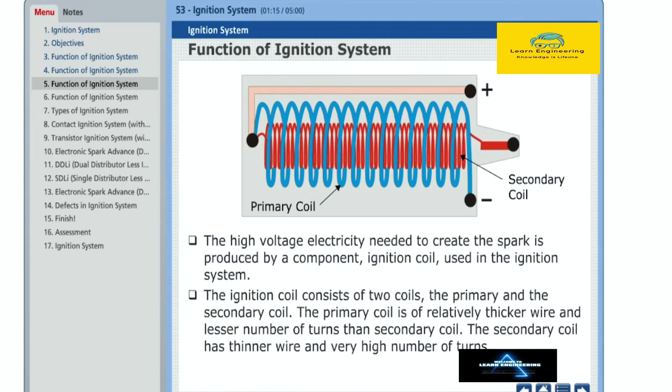The high voltage electricity needed to create the spark is produced by a component, ignition coil, used in the ignition system. The ignition coil consists of two coils, the primary and the secondary coil.